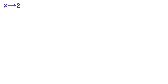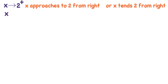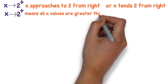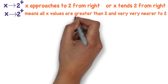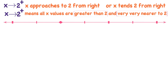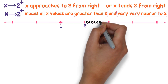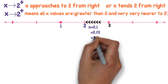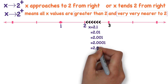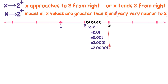Similarly, x approaches to 2 from right — we read it as 'x tends to 2 from right.' This means all x values are greater than 2 and very very nearer to 2. On the number line, the x values are 2.1, 2.01, 2.001, and so on — all nearer to 2 and approaching to 2 from right.